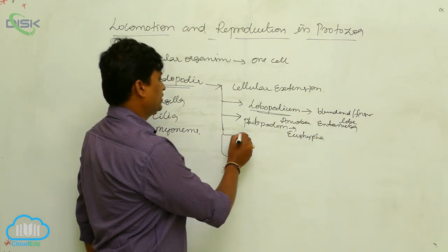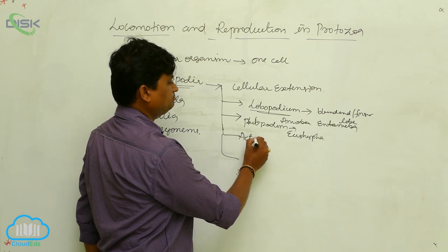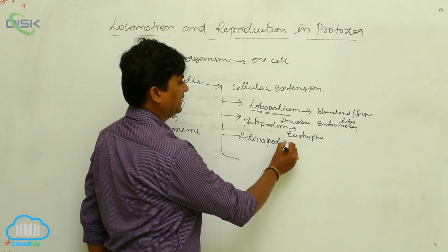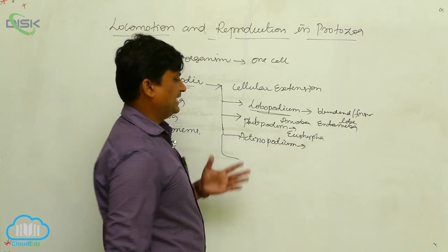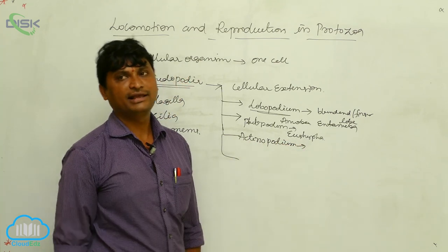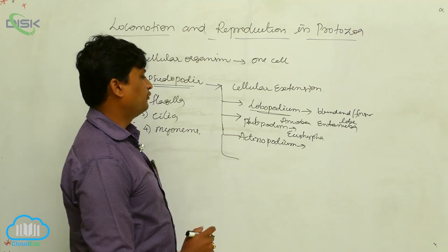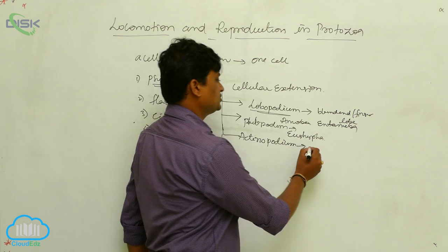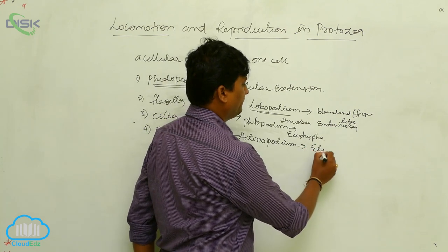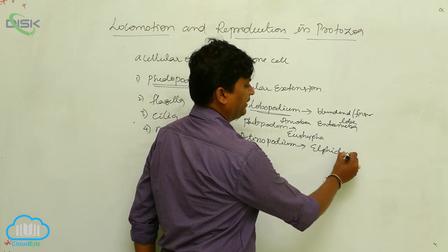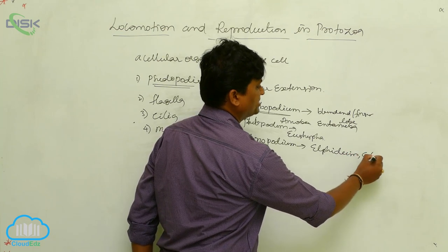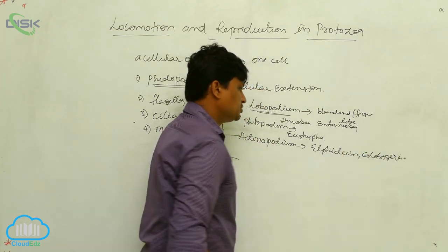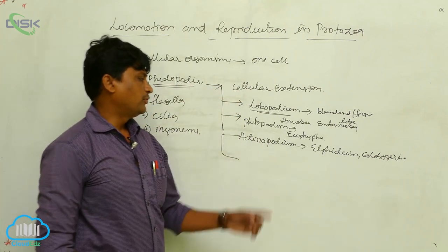The third type is actinopodia. Actinopodia are ray-like and finger-like pseudopodia with sharp edges. Examples of actinopodia are Elphidium and Globigerina.